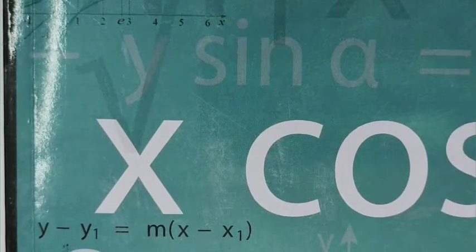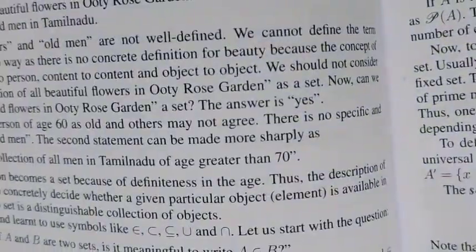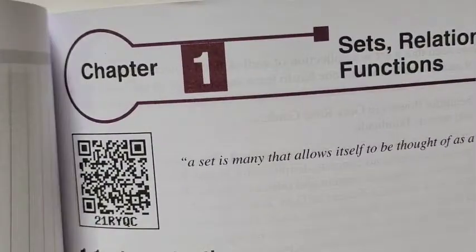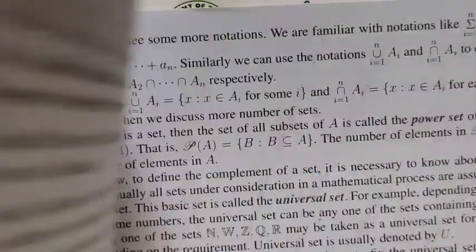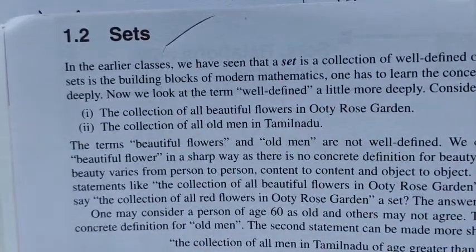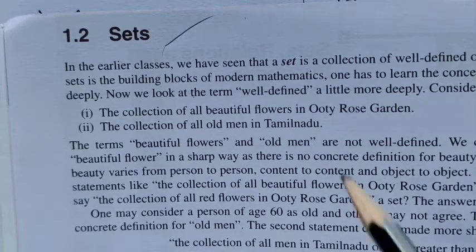Hello students, this is for 11th Math, Volume 1. We are covering Chapter 1, which is on Sets. In the previous class itself we have learned the basics, and now we see the first example: the collection of all beautiful flowers in a rose garden.